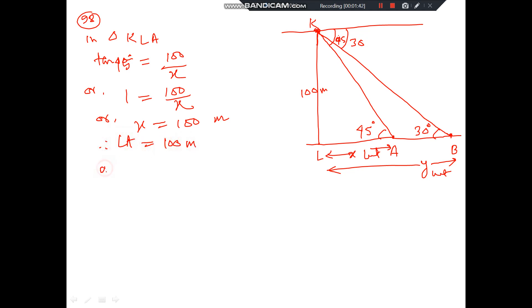And in triangle KLB, tan 30 degree is equal to perpendicular is 100, by base is y. Now see, tan 30 value 1 by root 3, is equal to 100 by y. So, y is equal to 100 root 3. That means, y means LB, is equal to 100 root 3 meter.